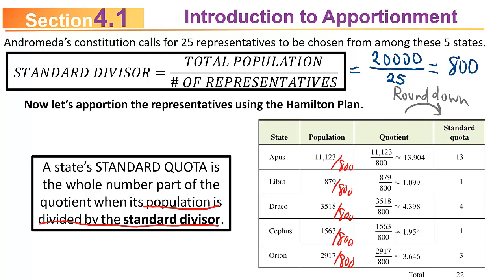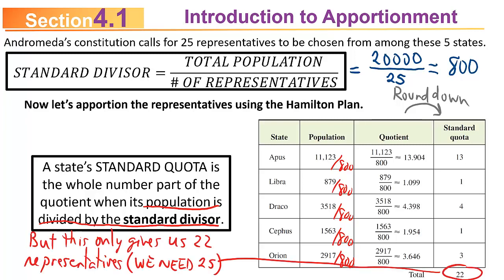Hamilton's plan says to round them down, chopping off the fractional parts. So the standard quota for Apis is 13, Libra is 1, Draco is 4, Cephas is 1, and Orion is 3. If you add up all those standard quotas, you get 22. But we're looking for 25 representatives, so we're three short.